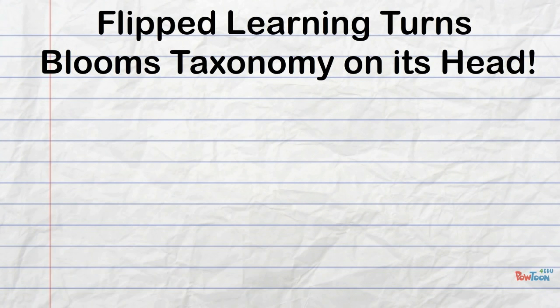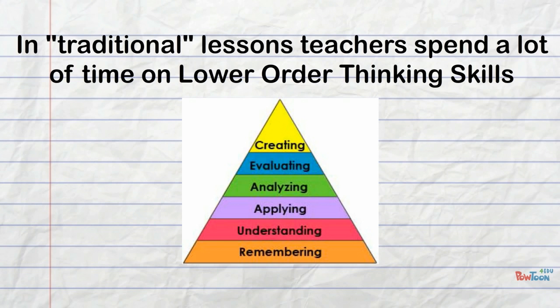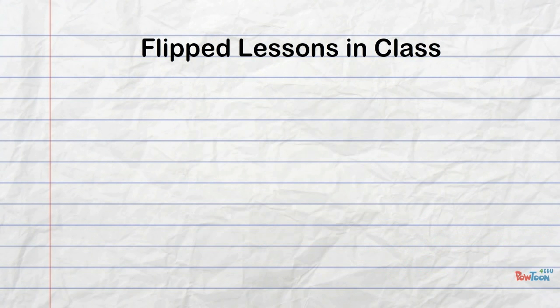A key aspect of flipped learning is essentially turning Bloom's taxonomy on its head. We're all familiar with the different levels of Bloom's taxonomy, starting with remembering all the way up to creating. And most of the time in class, in a traditional lecture or lesson, teachers spend a lot of time on the remembering and understanding — getting that foundational knowledge into the students. And flipped learning really turns Bloom's taxonomy on its head.